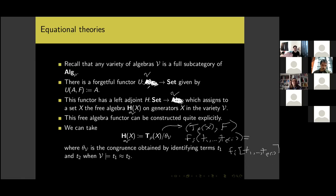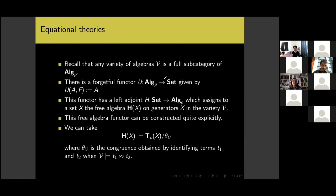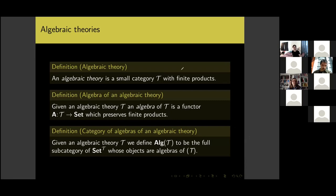Now I'm finally ready to talk about algebraic theories. Lawvere wanted to give a categorical treatment of universal algebra. For us, an algebraic theory is a small category T which has all finite products. An algebra of an algebraic theory is a functor from T to the category of sets which preserves finite products.